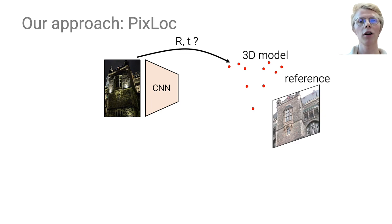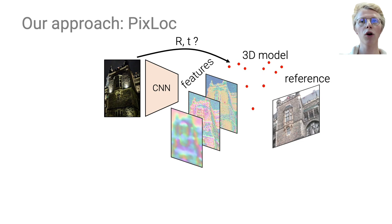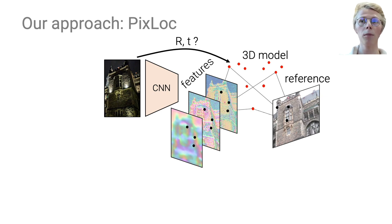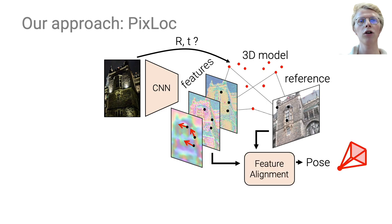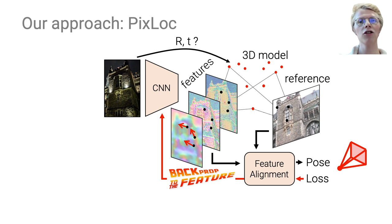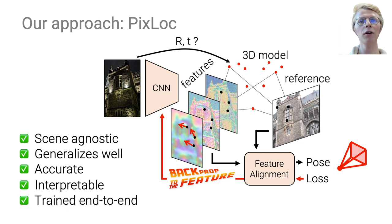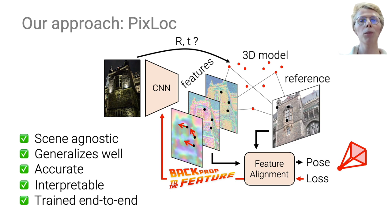Let's have a closer look at PixLoc. A CNN first predicts dense features for the query and for a corresponding reference image. Given local 3D points and a coarse initial pose, we can compute the error between query and reference features. A geometric optimization then refines the pose by aligning the features. The optimization is differentiable so that PixLoc is trained end-to-end by backpropagating to the features. By taking the 3D information out of the network, the features are generic. Our approach is scene-agnostic and generalizes well across domains. The direct optimization makes it very accurate, but also interpretable.